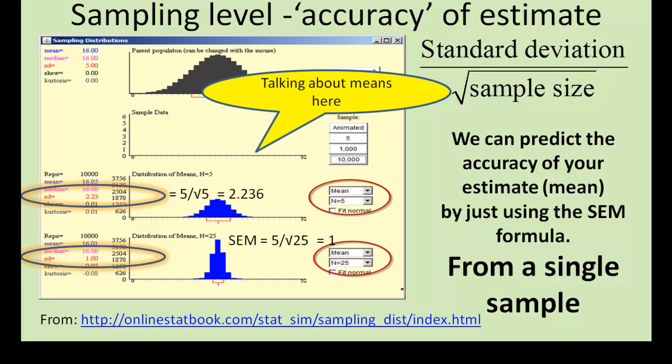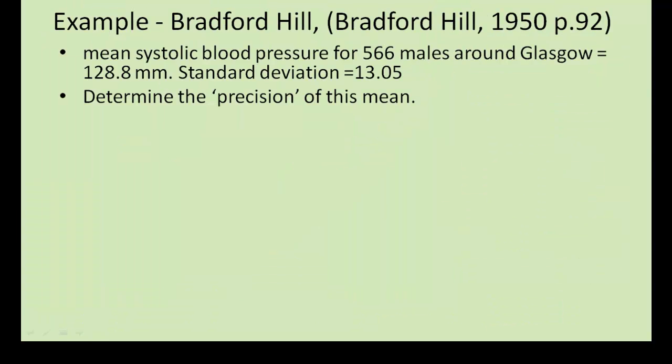Let's use all this knowledge in a very practical way. In 1950, Bradford Hill, a famous scientist, measured the mean systolic blood pressure for 566 males around Glasgow and found it to be 128.8 mmHg with a standard deviation of 13.5. He wanted to know how precise this mean was, that is the variability one would expect across samples.